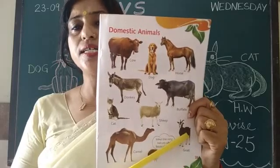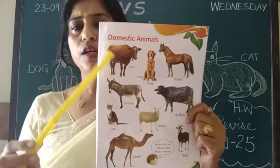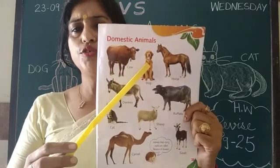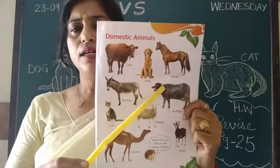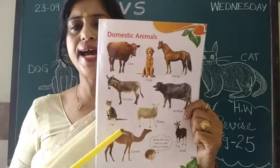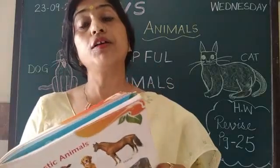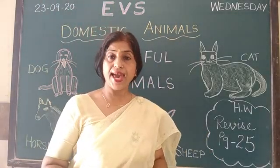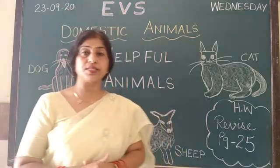Goat gives us milk. Again — domestic animals: cow, dog, horse, donkey, buffalo, sheep, cat, camel, goat. और भी और कहाँ हो सकते हैं — आप बताइए इसके अलावा. Honeybee, hen — these are also helpful animals.